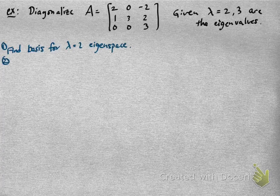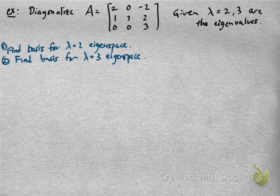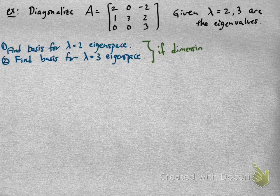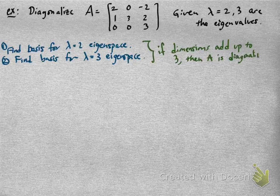If we want to diagonalize it, this is going to break up into two pieces. We need to find a basis for the lambda equals 2 eigenspace, and then we also need to find a basis for the lambda equals 3 eigenspace. Any eigenvector with eigenvalue 2 is going to be linearly independent from any eigenvector with eigenvalue 3, because distinct eigenvalues give you linearly independent eigenvectors. So we can diagonalize A — we can find 3 linearly independent eigenvectors — as long as the dimensions of these eigenspaces add up to 3. We'll compute each eigenspace and find a basis for each one.